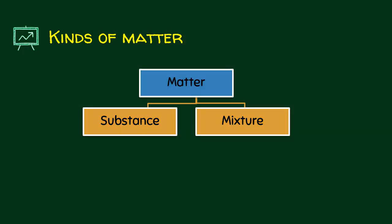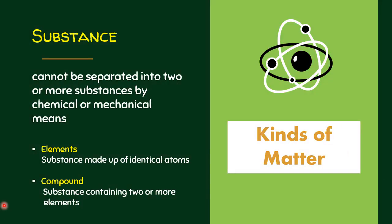Let's look at the different kinds of matter. Matter can be divided into two: substance and mixture. A substance cannot be separated into two or more substances by chemical or mechanical means. There are two kinds of substance: an element and a compound. Elements are substances made up of identical atoms, whereas a compound is a substance containing two or more elements. Elements are the ones found in the periodic table of elements.